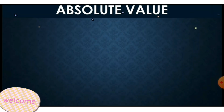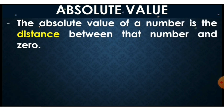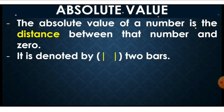So let's proceed to the absolute value. The absolute value of a number is the distance between the number and zero. When we say absolute value, it is referring to the distance — how far is the number from zero. It is denoted by this symbol: two vertical bars.